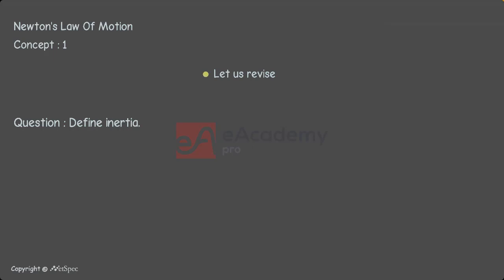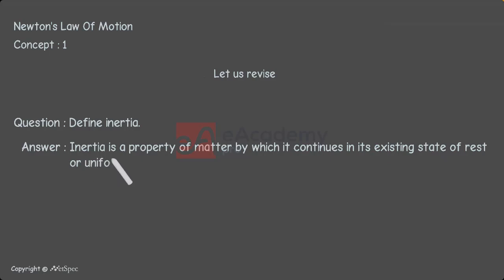Define inertia. Inertia is a property of matter by which it continues in its existing state of rest or uniform motion in a straight line unless that state is changed by an external force.